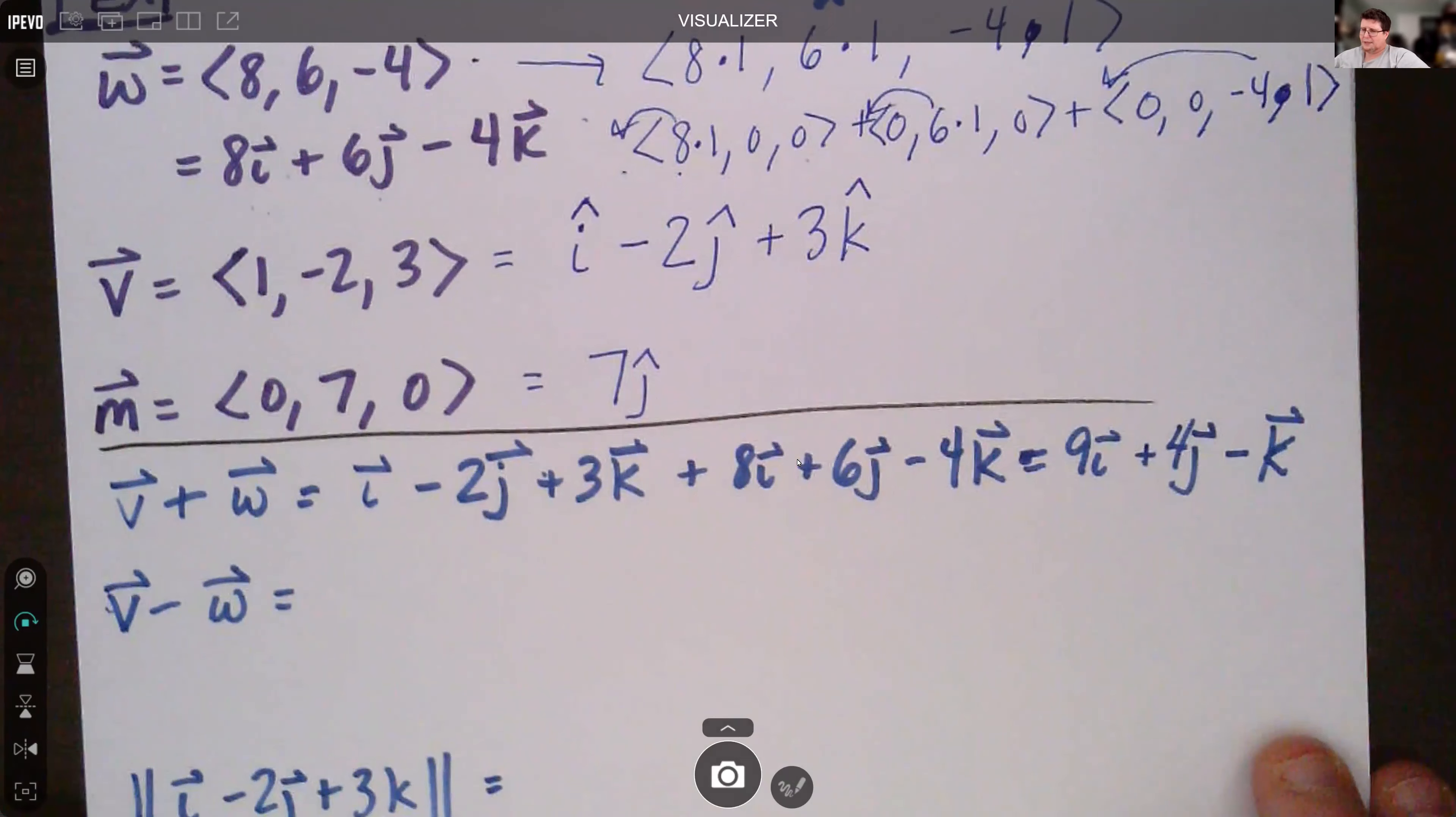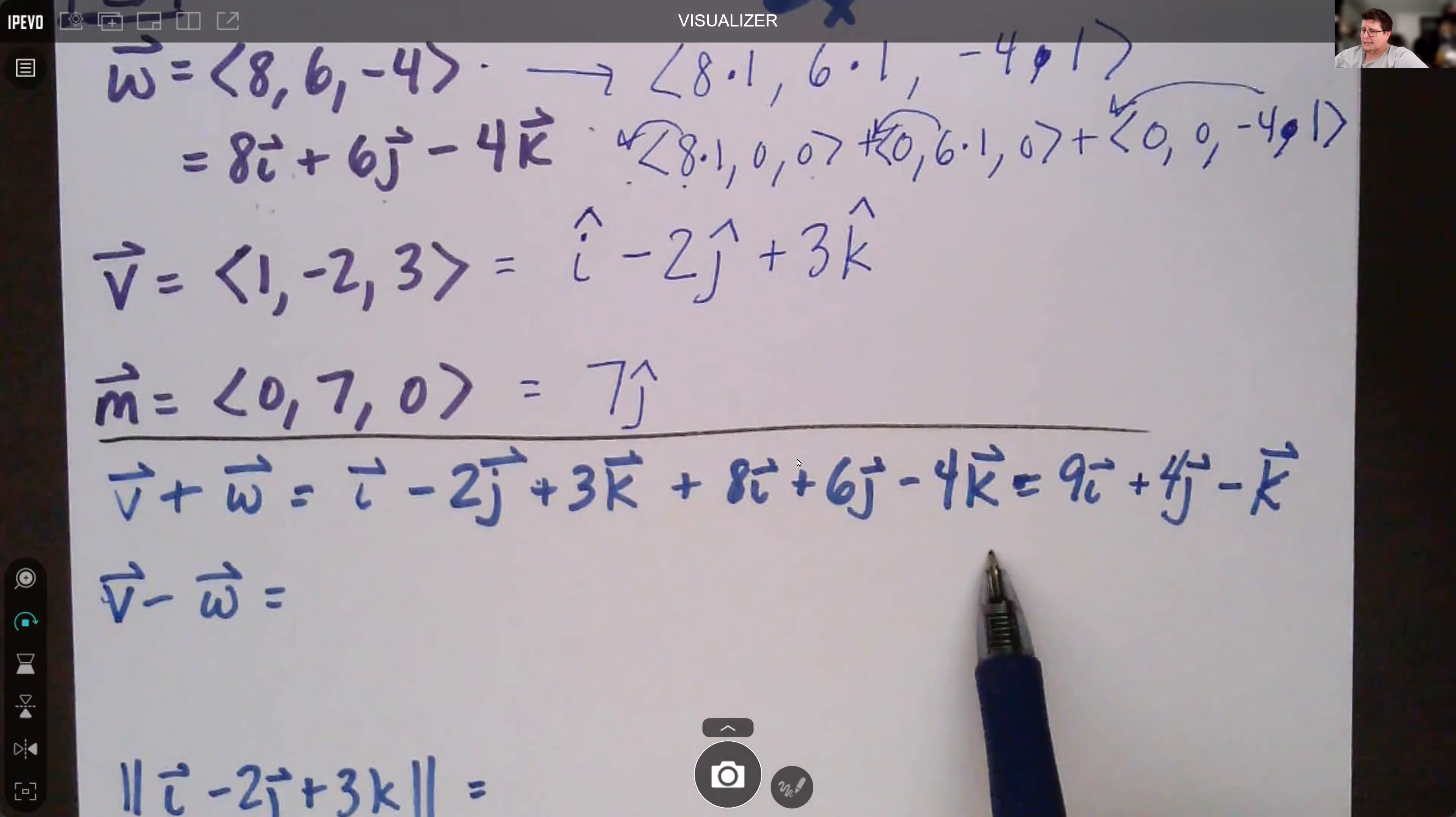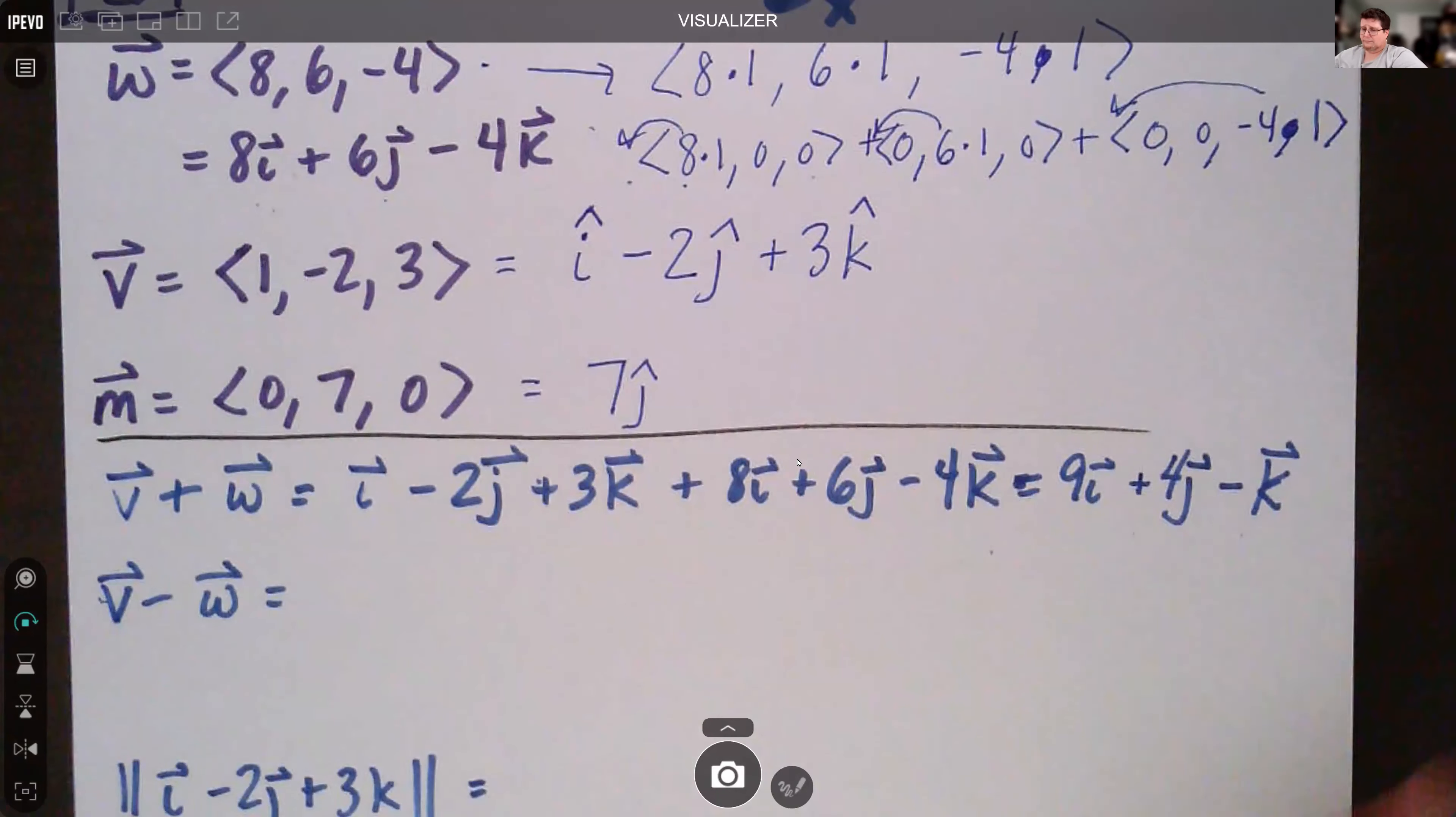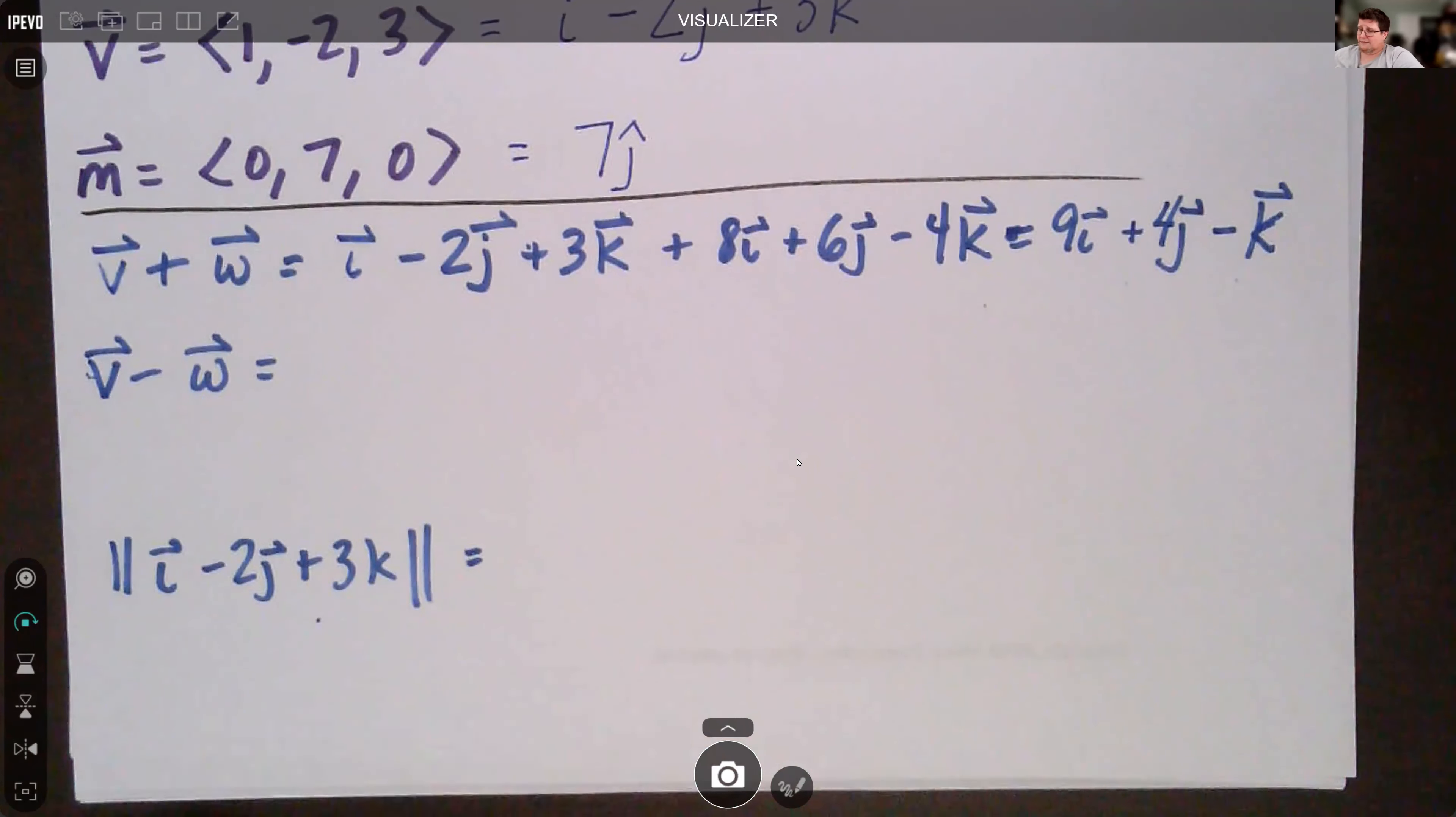Then we can look at doing some addition and subtraction using the ijk components rather than the vector components. If we write the v vector as i minus 2j plus 3k, and then w which was up above is the 8i, 6j, and minus 4k. When we add them together, you add the individual components together: i plus 8i is 9i, negative 2j plus 6j is 4j, and then 3k minus 4k is negative k. Go ahead and give yourself a little example. Try to do v minus w, and then find the magnitude of this.